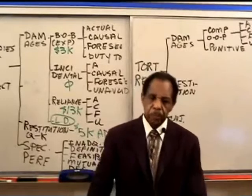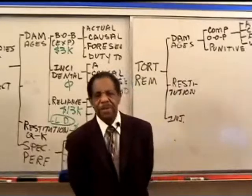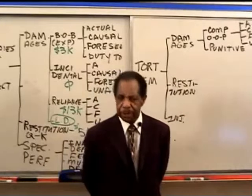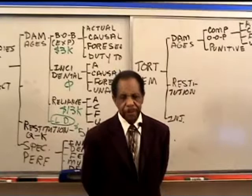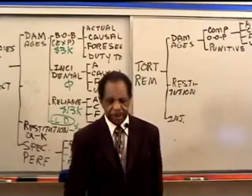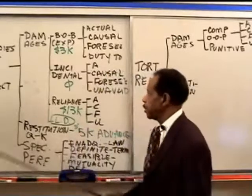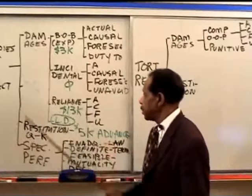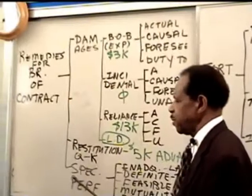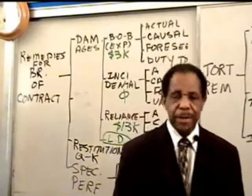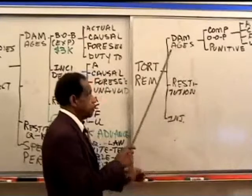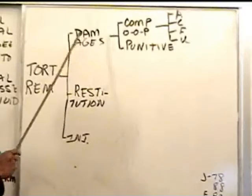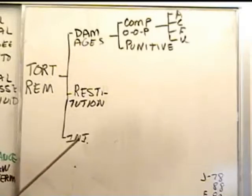We are now going to look at the remedies for a tort as opposed to the remedies for breach of contract. There are three remedies for breach of contract as we discussed: damages, restitution, and specific performance. In the case of a tort, there are also three remedies: damages, restitution, and injunction instead of specific performance.